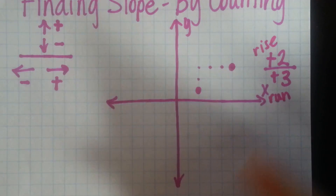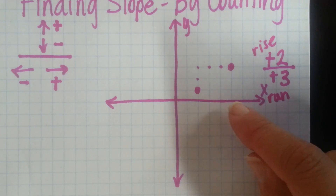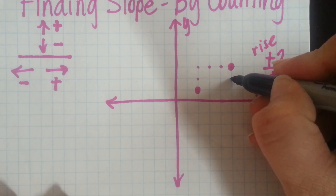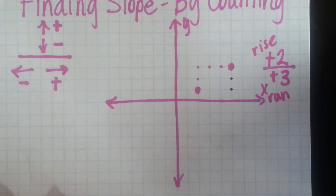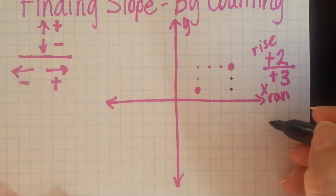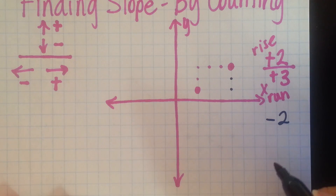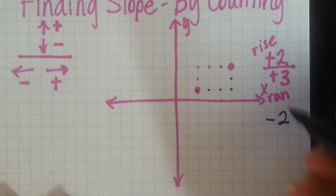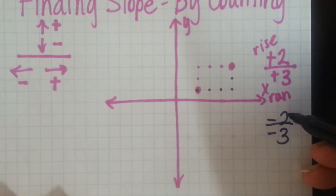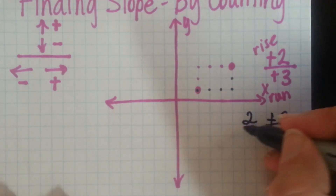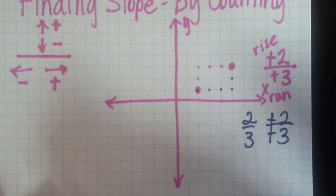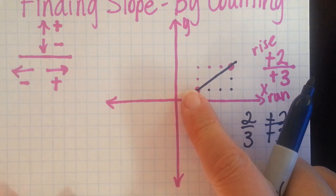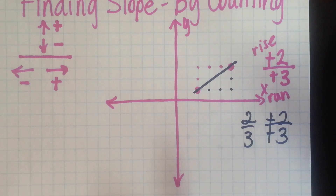You may ask yourself, what if I counted the other direction? What if I counted down and then to the left? Well, if we counted down from here, we would go down two, so that would be a negative two. Then I could go back three to the left, and be back on my point, which is a negative three. Negative two over negative three reduces to be positive two over three, so I still get the same slope. If I draw the line through there, it is heading up from left to right, so it would be a positive slope.